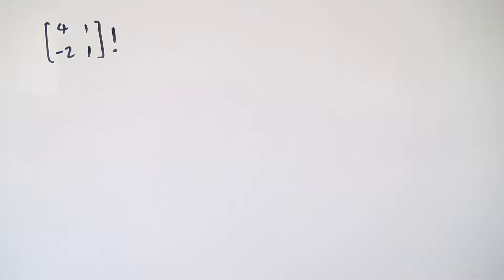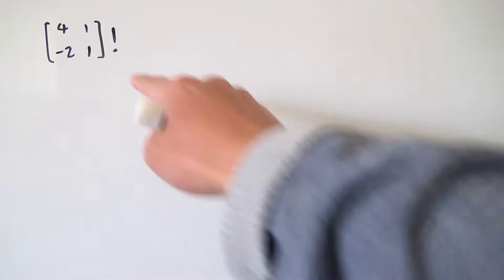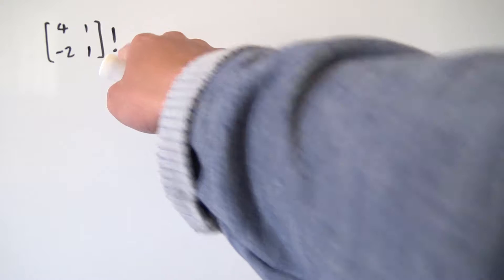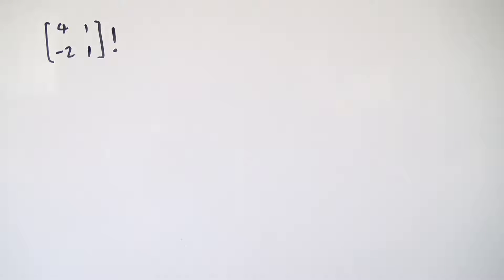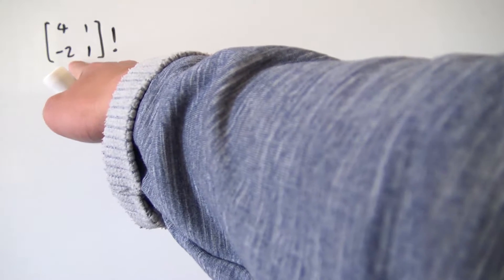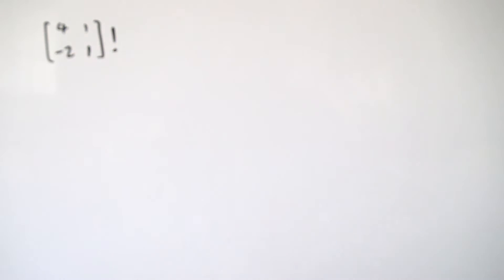Hello everybody, and today we're going to be looking at how we can define the factorial of a matrix. Right away we're presented with a little bit of an issue because the factorial is only defined for the natural numbers including zero, and unfortunately our 2x2 matrix is not an element of the natural numbers, so we're kind of stuck.